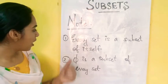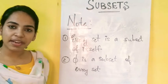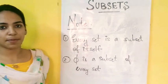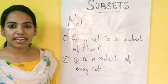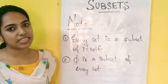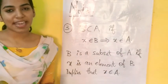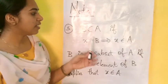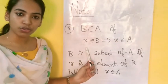So now let's add some notes. The first note says: every set is a subset of itself. If x belongs to B, it implies x belongs to A. We call this the subset condition, and we denote it accordingly. If we call it A, we call it a subset.